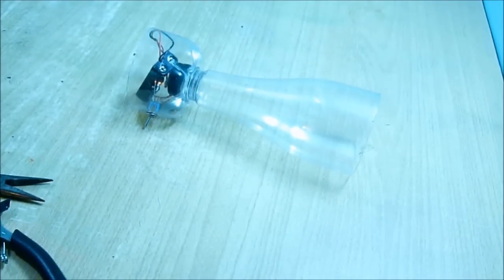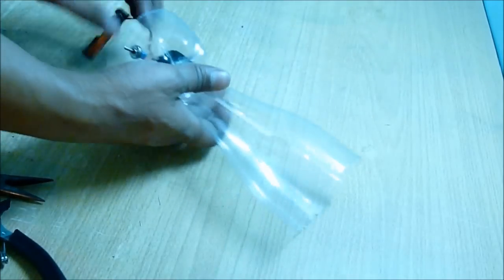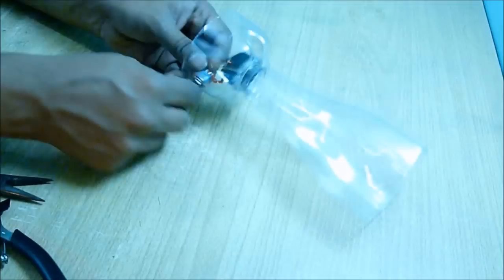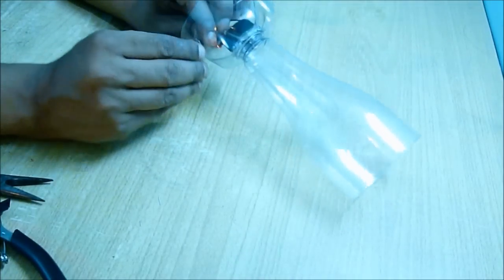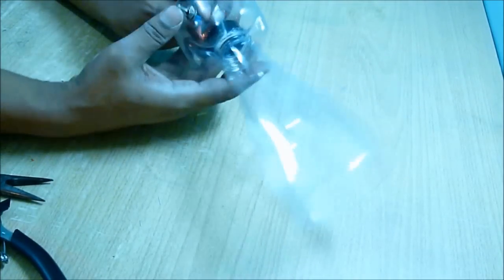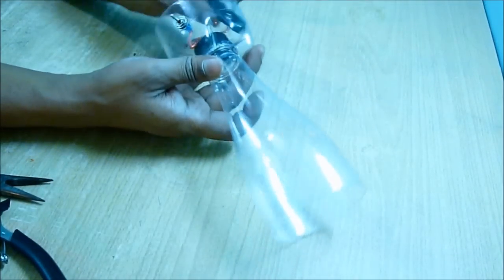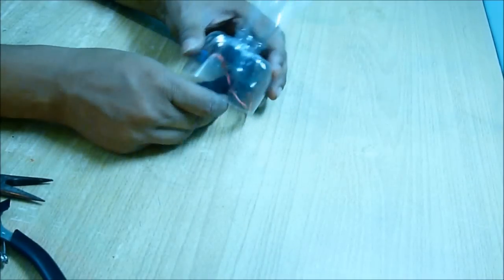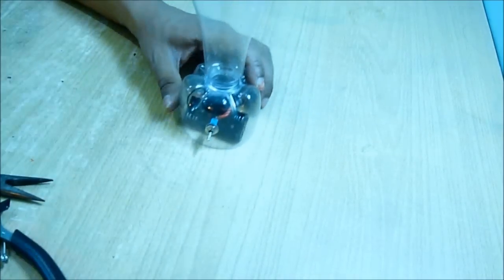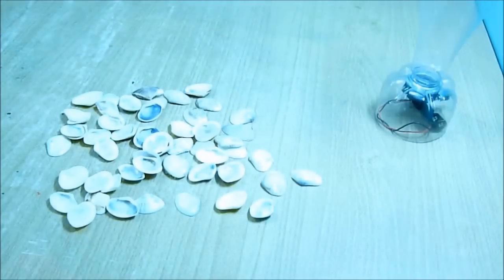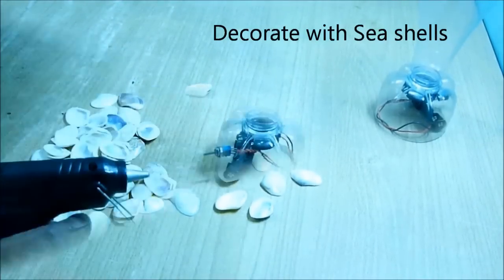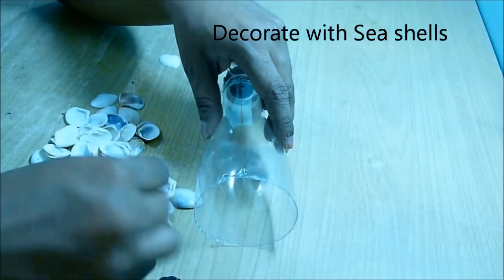Now place the cap again at the bottom and fit the switch on the base by cutting a small hole. The battery, battery holder, switch—everything will be inside the base. Now we are going to decorate this vase.